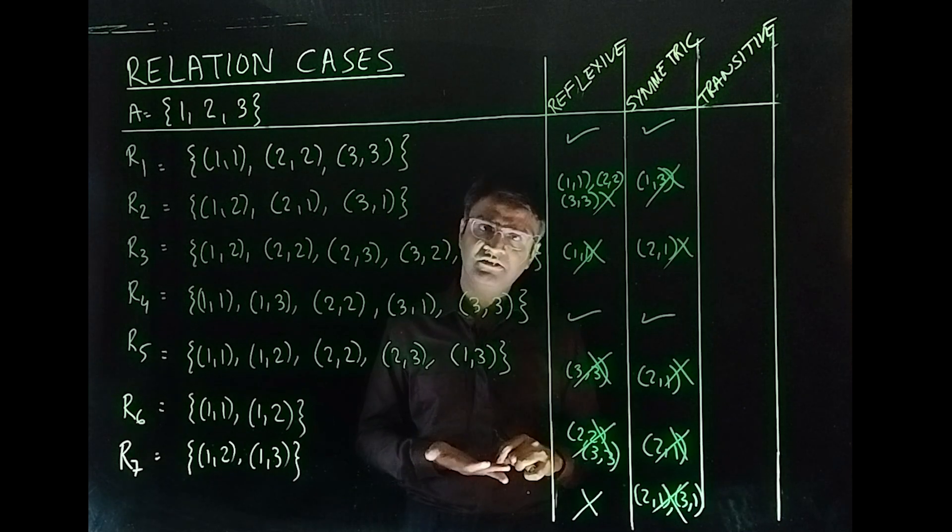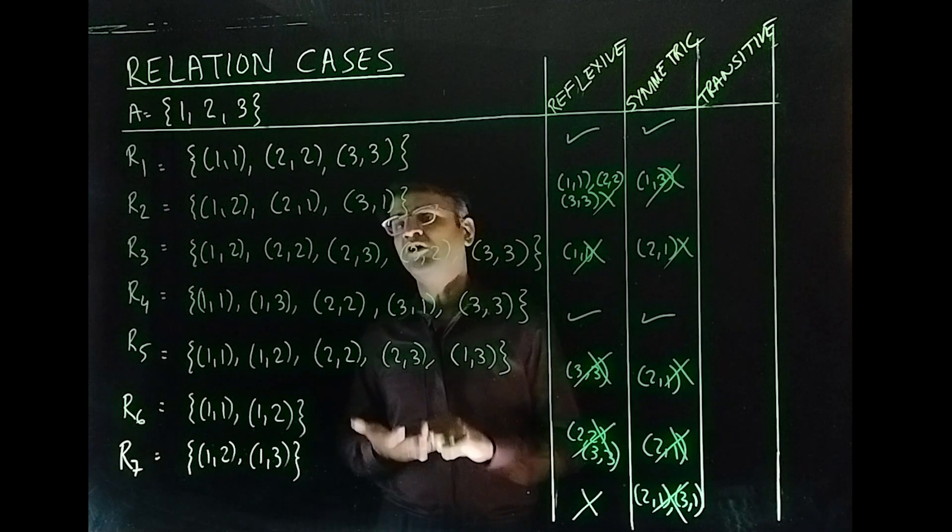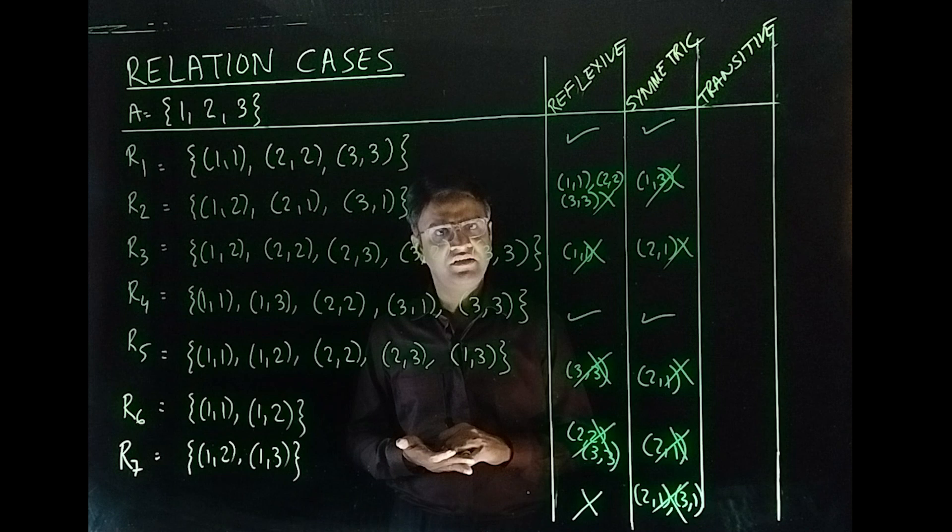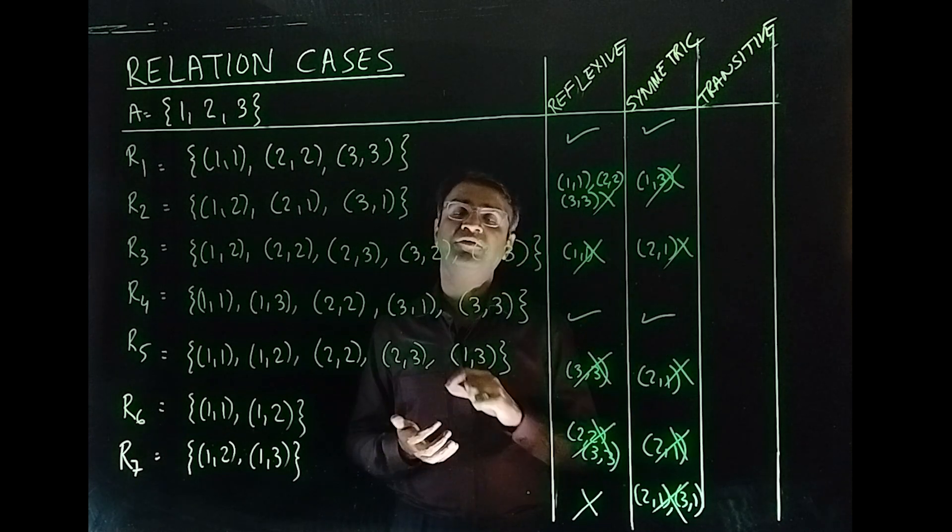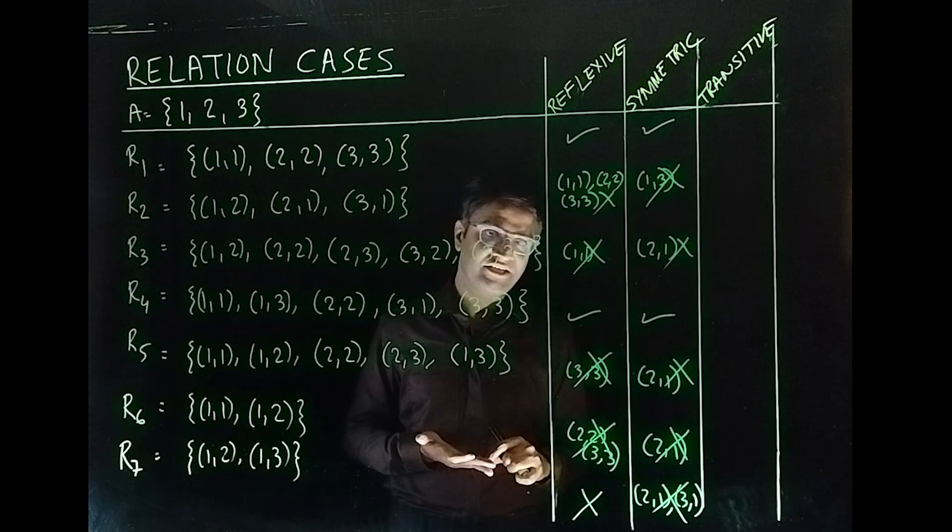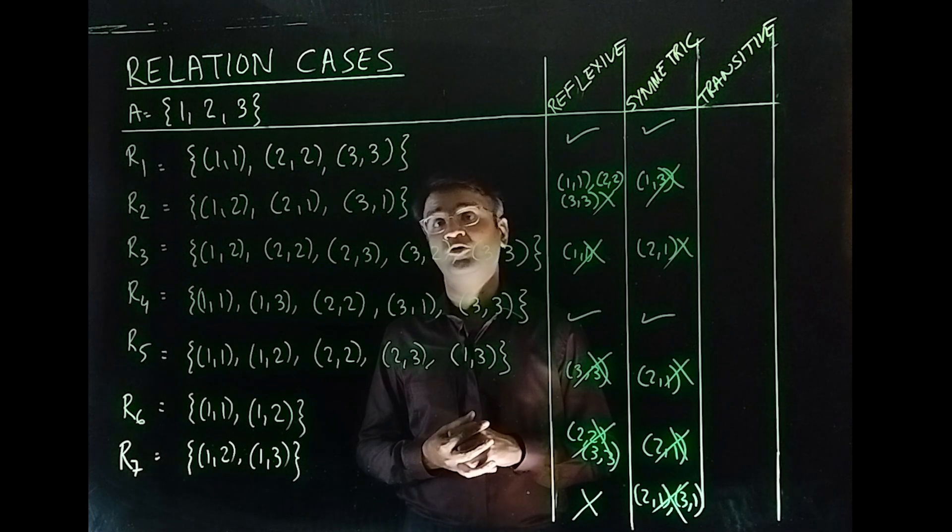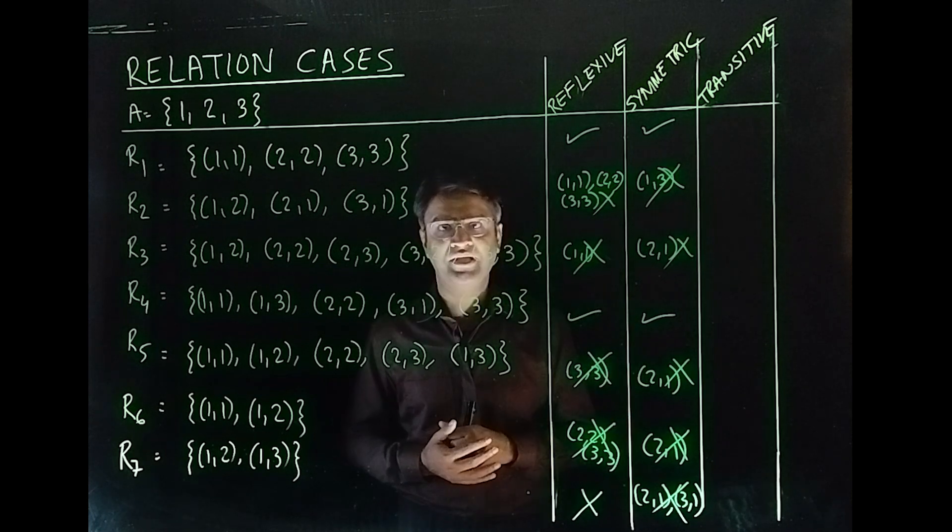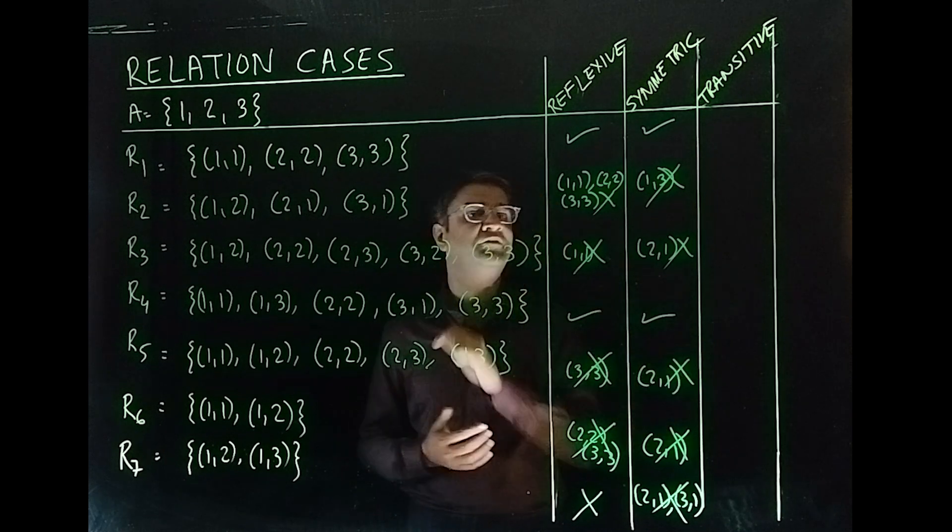Which means you must have (A,B), (B,C), (A,C), first-second, second-third, first-third. So, when it is not transitive, it is not transitive. If you have (A,B), (B,C), the third one is missing or you have (A,B), (B,C), instead of having (A,C), you have (C,A), then also it is not transitive.